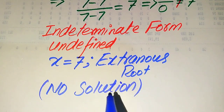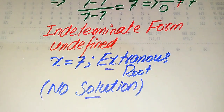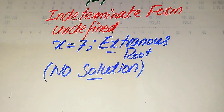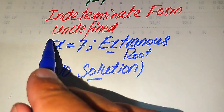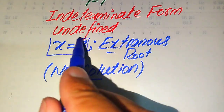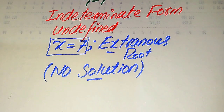The root which satisfies the given question statement is called the solution, and the root which does not satisfy it is called the extraneous root. Here, x equals 7 is the extraneous root because it does not satisfy our given equation, and unfortunately this question does not have any solution.